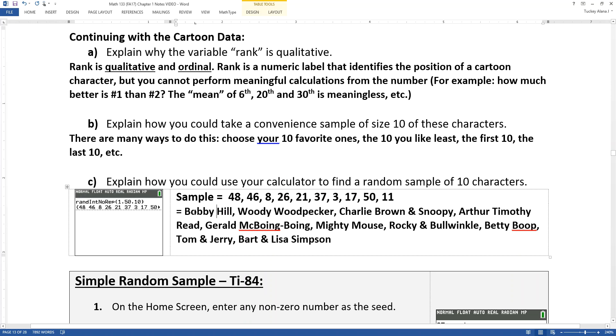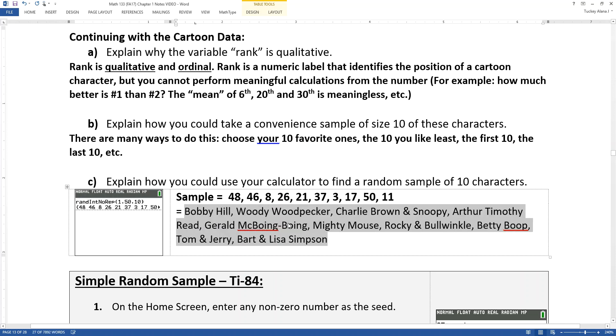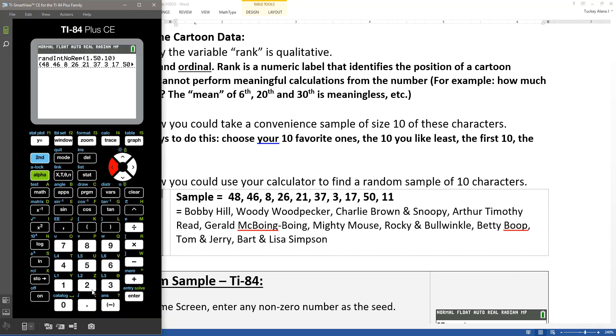You can write it with just the numbers for our purposes, but technically the sample is actually all these different characters. Bobby Hill was number 48, Woody Woodpecker was 46, Charlie Brown and Snoopy was number 8, and so on. But for our purposes it just takes forever to write all this stuff, so we just write the numbers down. Remember, you had to use the right arrow to get over and see the last number because 10 was a little bit too wide for our calculator.